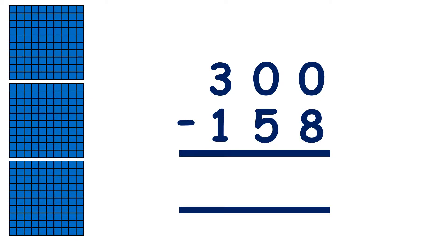Here we have 300 minus 158. With column subtraction, we have to start with the units. But we have 0 units and we need to subtract 8.